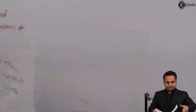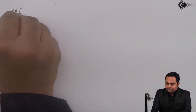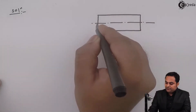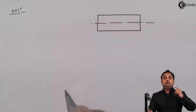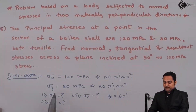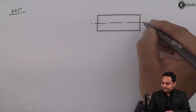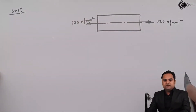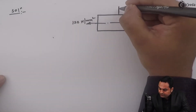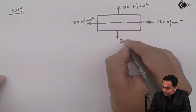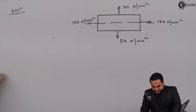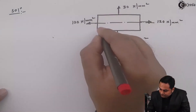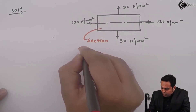In the solution, first we need to draw the diagram. This is the member which is given, subjected to stresses in two mutually perpendicular directions - Sigma X and Sigma Y, both tensile. Sigma X is 120 N/mm² and Sigma Y is 30 N/mm² perpendicular to it. This is the part of the boiler shell given in the problem.